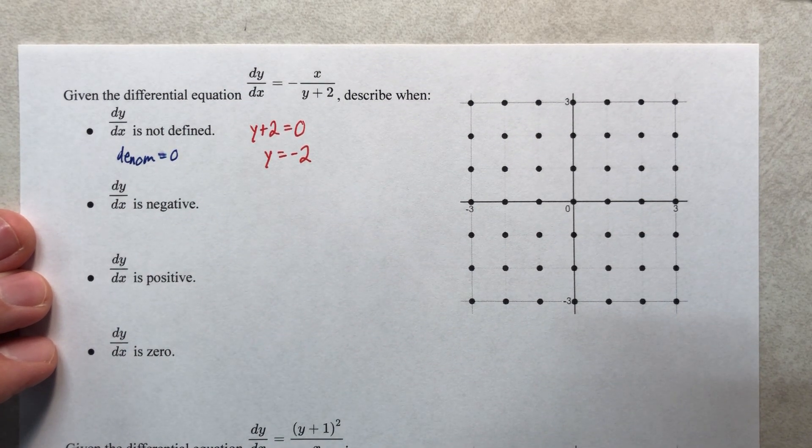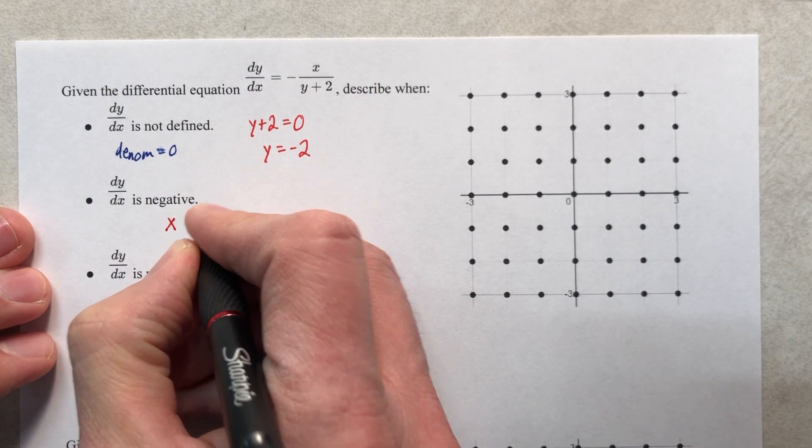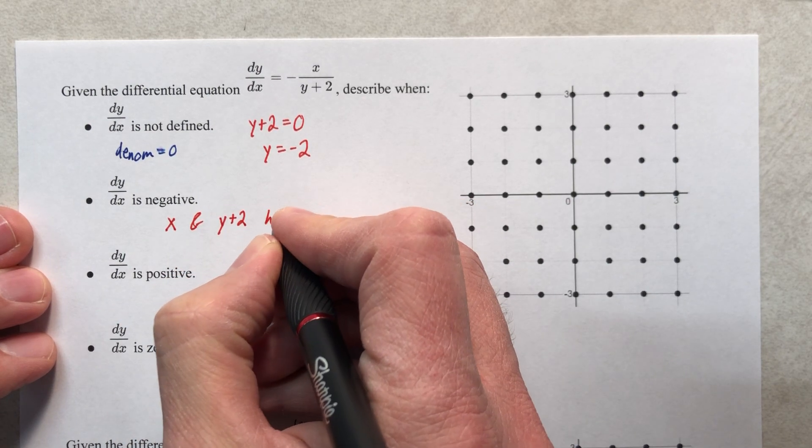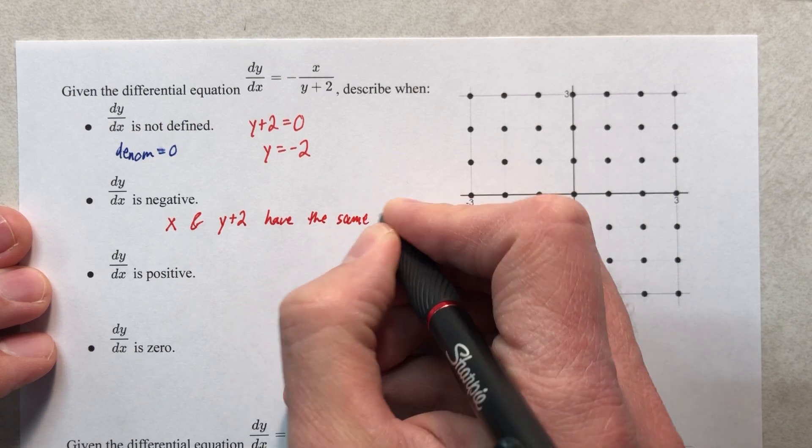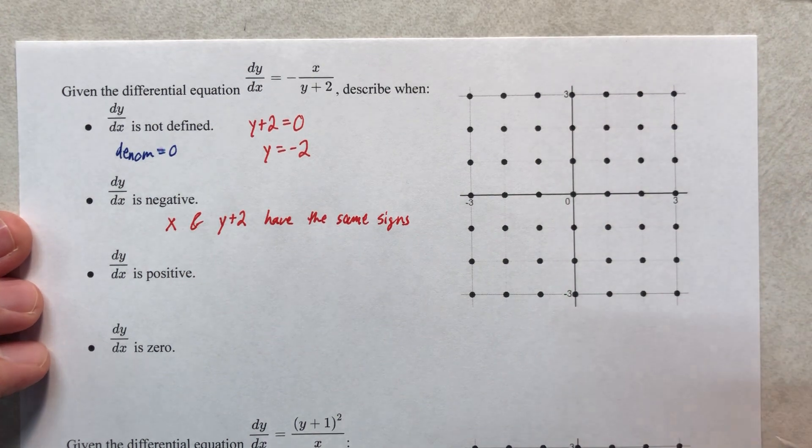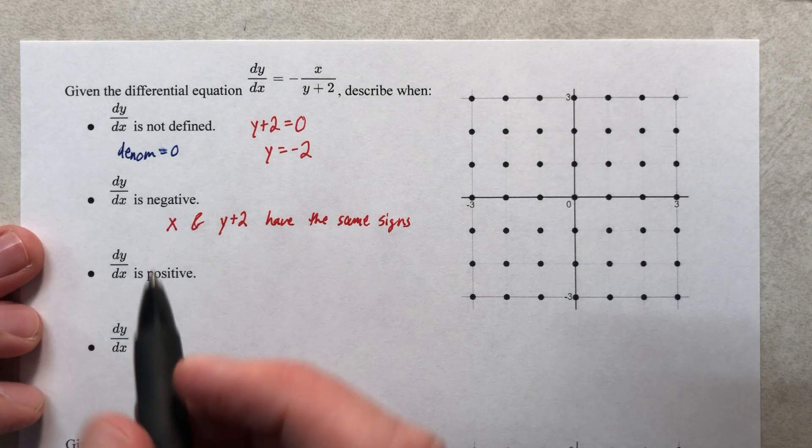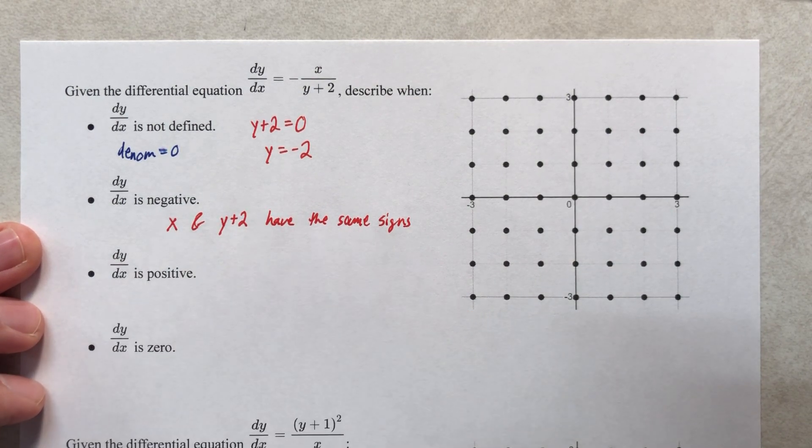So let's just kind of put that into words. The entire slope would be negative if, here it goes, writing in red, if x and the denominator have the same signs. We could write all these points out, do the whole thing, take forever, we're not, but we would realize that when x and y plus 2 have the same sign, we'll have a negative slope.